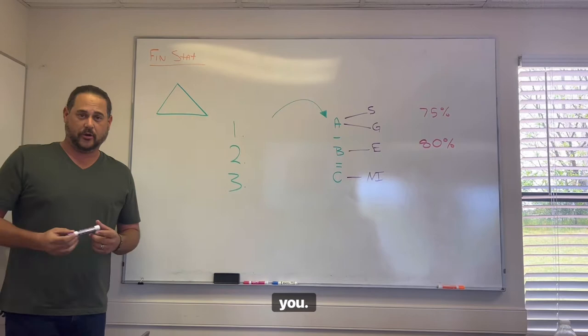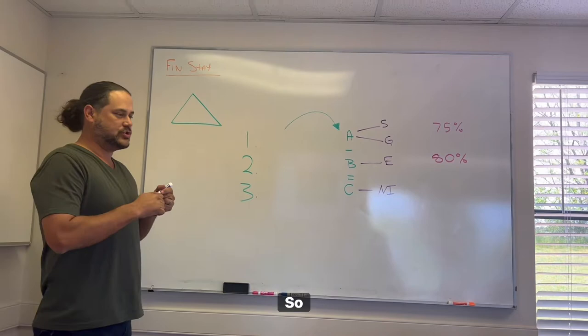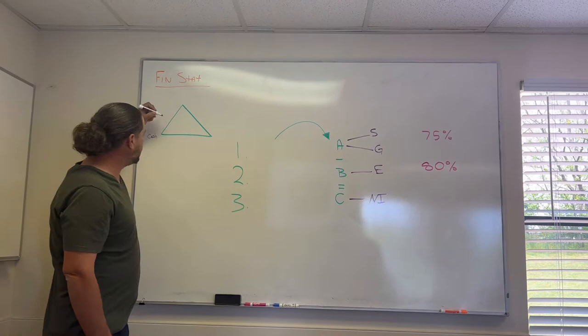Everybody knows that a financial statement consists of three things, like the triangle of success. So what are those? First thing you have is cash flow statement. You got to make sure you always have enough cash.